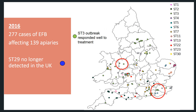Moving to 2016, strain type 3 responded well to treatment — the outbreak in Wales was successfully dealt with, whilst the outbreak in the south-east improved significantly. In 2016, there were 277 cases of EFB affecting 139 apiaries, lower than the previous two years. A strain type actually disappeared from England and Wales in 2016: strain type 29 (represented by a blue dot), which was present at very low levels in 2014 and 2015, was no longer found in 2016.